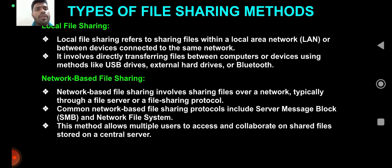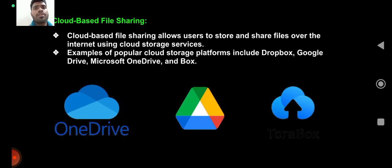Network-based file sharing involves sharing files over a network, typically through a file server or file sharing protocol. Common network-based file sharing protocols include SMB (Server Message Block) and NFS (Network File System). This method allows multiple users to access and collaborate on shared files stored on a central server. Cloud-based file sharing, familiar through services like Google Drive, allows users to store and share files over the internet. Examples include OneDrive, Box, Microsoft, and Dropbox.